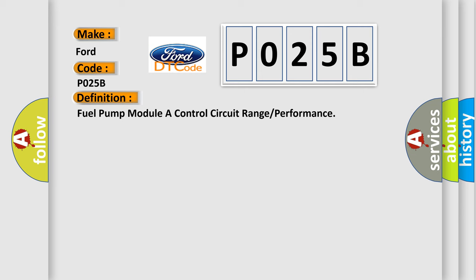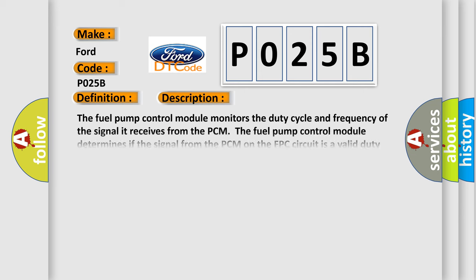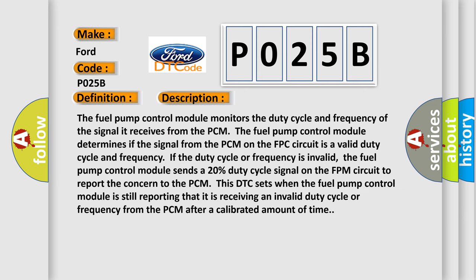The basic definition is: Fuel pump modular control circuit range or performance. And now this is a short description of this DTC code. The fuel pump control module monitors the duty cycle and frequency of the signal it receives from the PCM. The fuel pump control module determines if the signal from the PCM on the FPC circuit is a valid duty cycle and frequency.